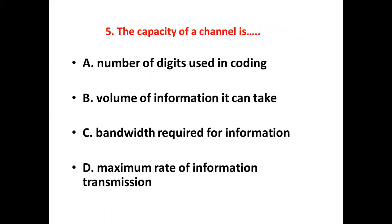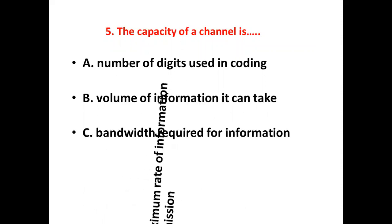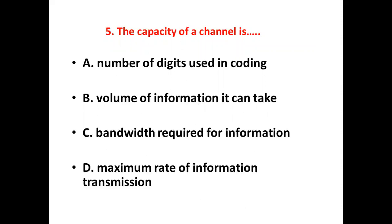Fifth bit. The capacity of a channel is dash. Option A: Number of digits used in coding. Option B: Volume of information it can take. Option C: Bandwidth required for information. Option D: Maximum rate of information transmission. Answer: Option D, Maximum rate of information transmission.